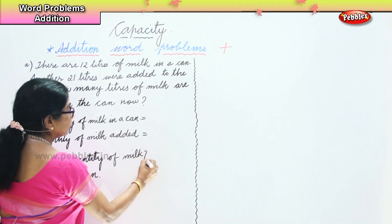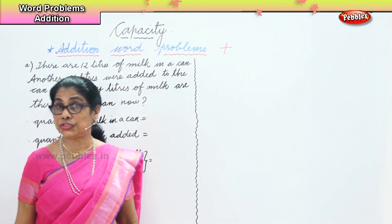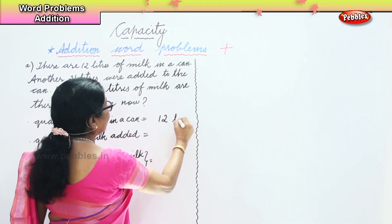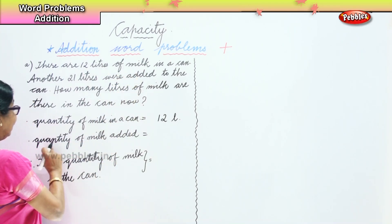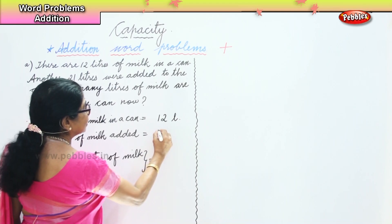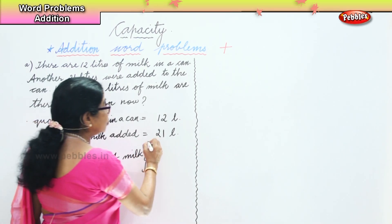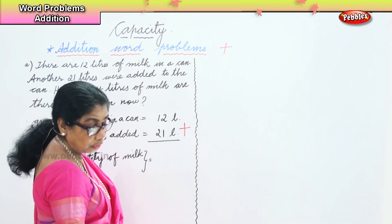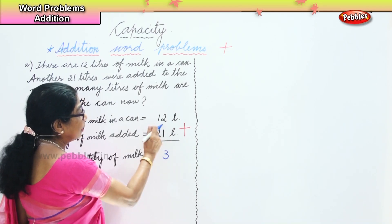So there are three statements. Quantity of milk in the can is 12 liters. Quantity of milk added is 21 liters. The question is how many liters of milk are there in the can, so we need to add these two to get the answer. It's an addition problem. Put down 12 liters plus 21 liters.